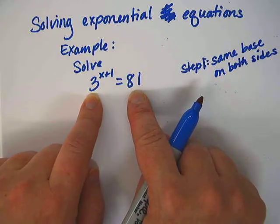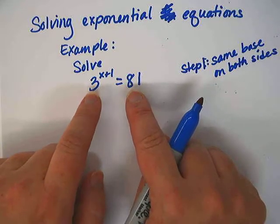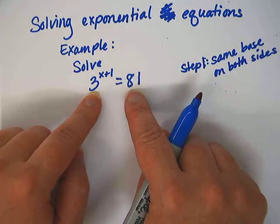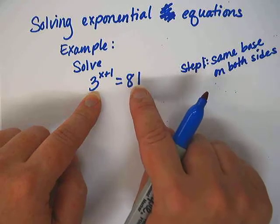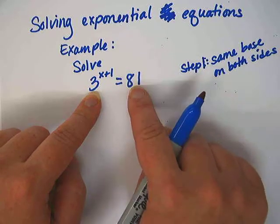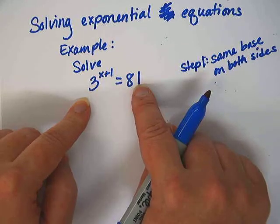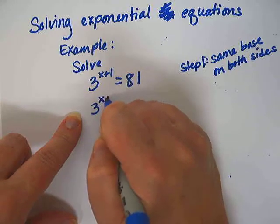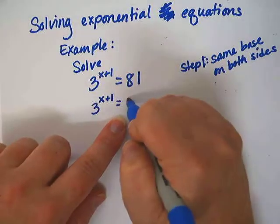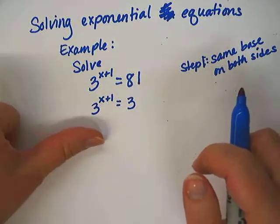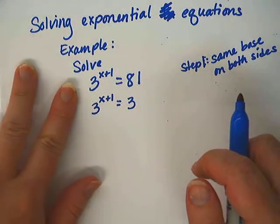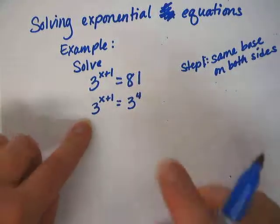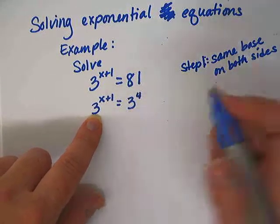When I say base, that means I have this number 3 and I have this number 81, and I want to change it so that I have the same number on both sides to a power. Well obviously 3 is a prime number, so we can't go smaller than 3. But the number 81 is actually a power of 3. We can rewrite the number 81 as 3 to a power. So we can rewrite our problem as 3 to the x plus 1 equals 3 to what power is 81? Well, 3 times 3 is 9 times 3 is 27 times 3 is 81. So I believe it's 3 to the fourth power. Does that sound correct?